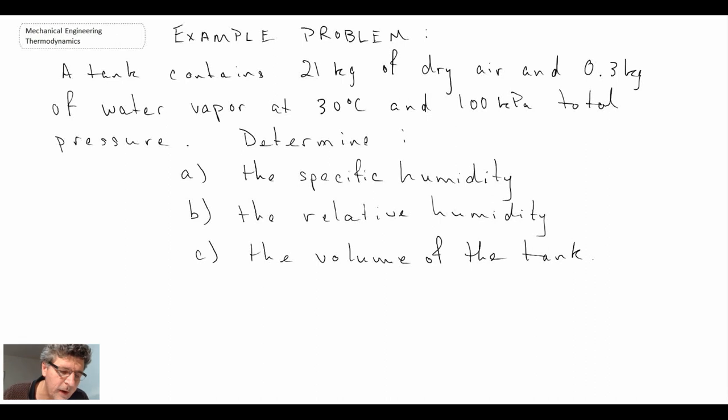So there's our example problem. We're told that we have a tank with 21 kilograms of dry air, 0.3 kilograms of water vapor at 30 degrees C and 100 kPa. They want us to determine specific humidity, that is omega, and the relative humidity, that is phi. The final thing they want us to determine is the volume of the tank itself. So let's start proceeding through calculating this problem.